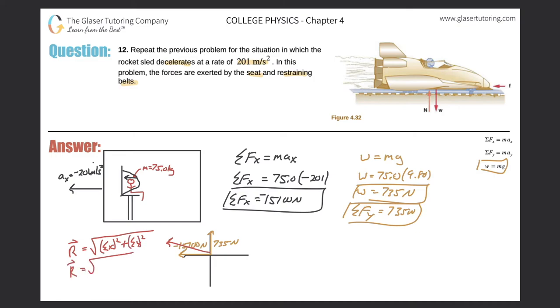So now, to calculate this resultant vector, simply take the sum of all the x values squared plus the sum of all the y values squared and then just square root them. So the square root of negative 15,100 squared plus 735 squared. Just take out the calculator, plug that bad boy on in.